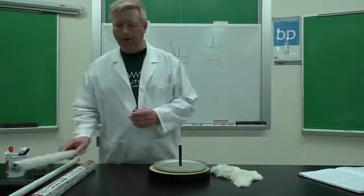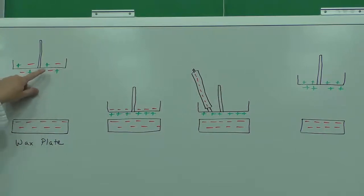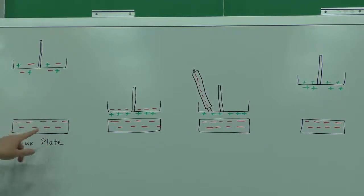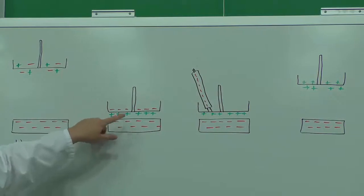The way the electrophorus works is that initially the aluminum plate is neutrally charged, so it's got an approximately even amount of positive and negative charge. After I rub the wax plate with fur, it's going to collect a negative charge. Then when we bring the aluminum plate close to the wax base, we start to see polarization.